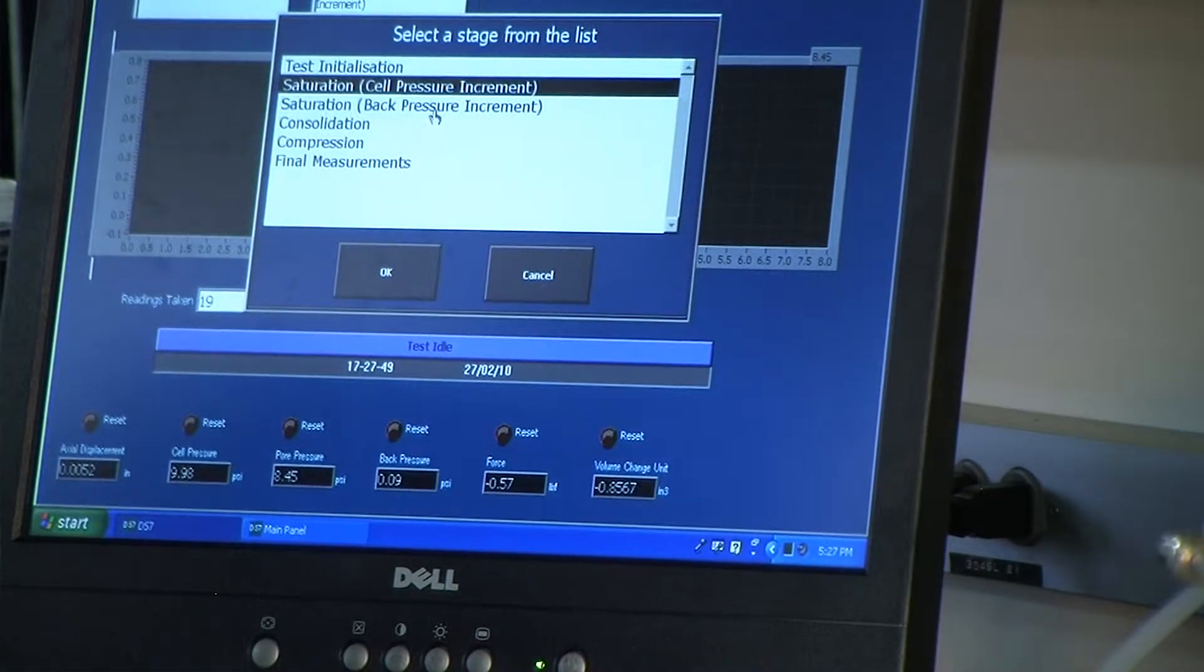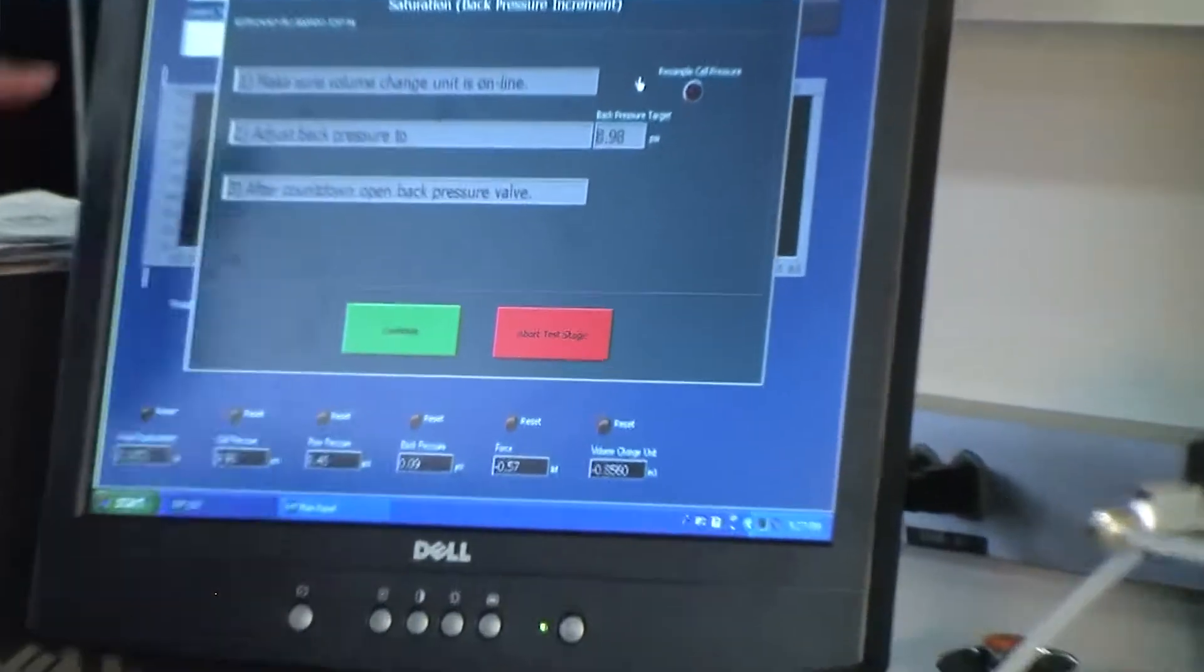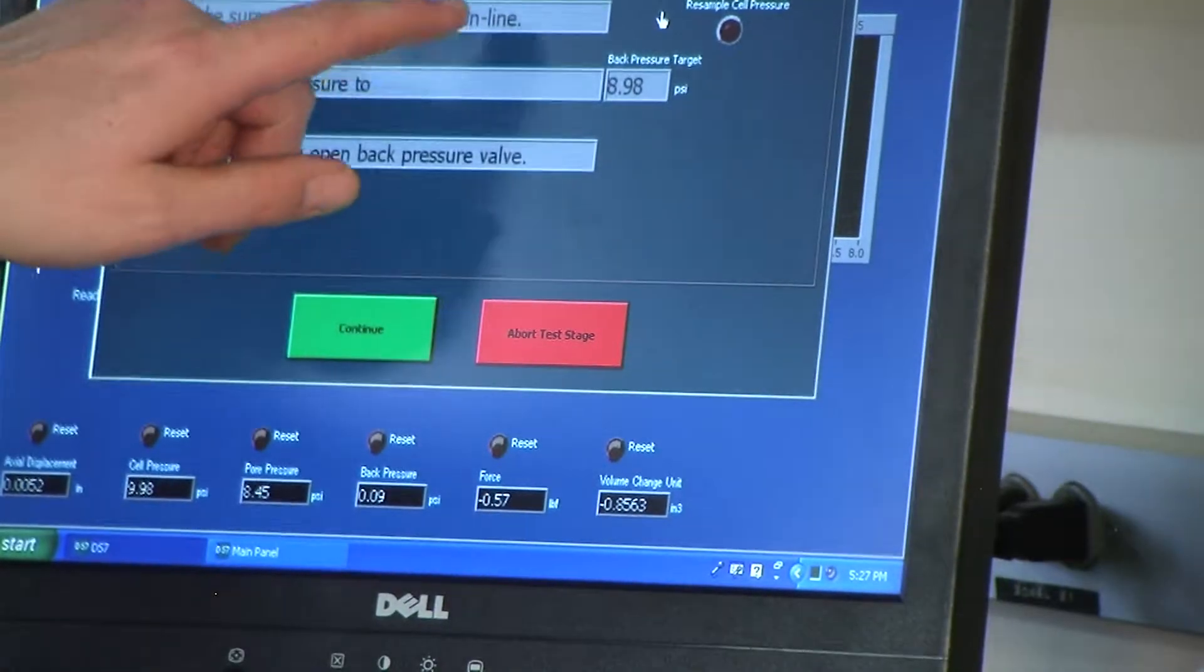We're going to go to saturation, backpressure increment, click okay, and again, follow the instructions on the screen. Step 1, make sure the volume change unit is online.